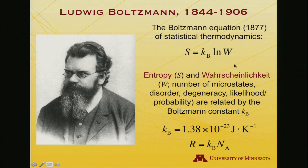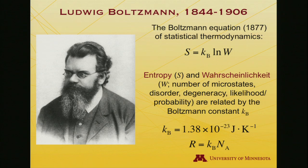W stood in German for Wahrscheinlichkeit, and it can mean a number of things in that equation: the number of microstates, the disorder, the degeneracy. That German word is well translated as 'likelihood' or 'probability' — perhaps less in the strictly mathematical sense, and more in the sense of likelihood. In any case, the equation shows a relationship between the likelihood of a number of things and the concept known as entropy.